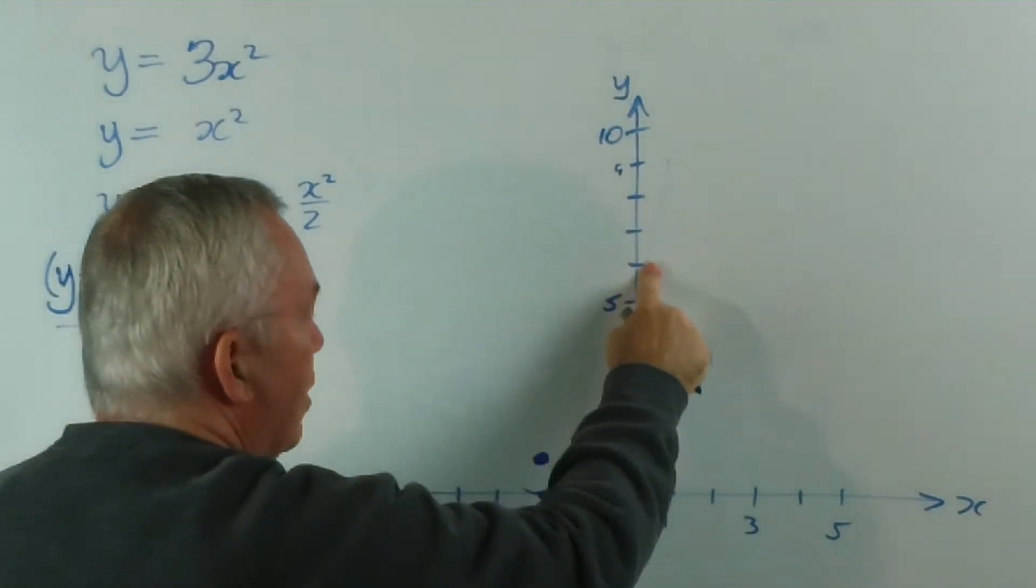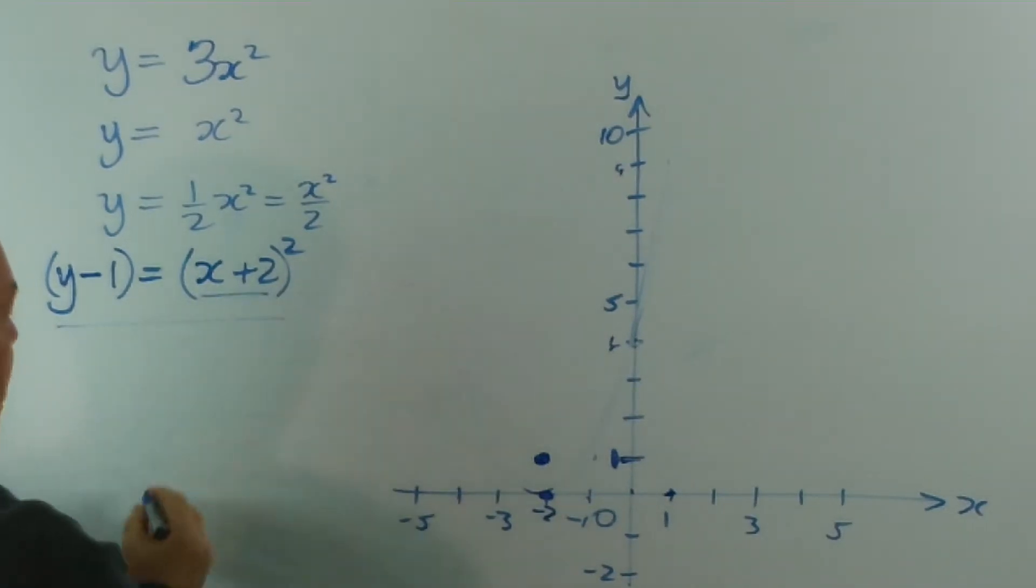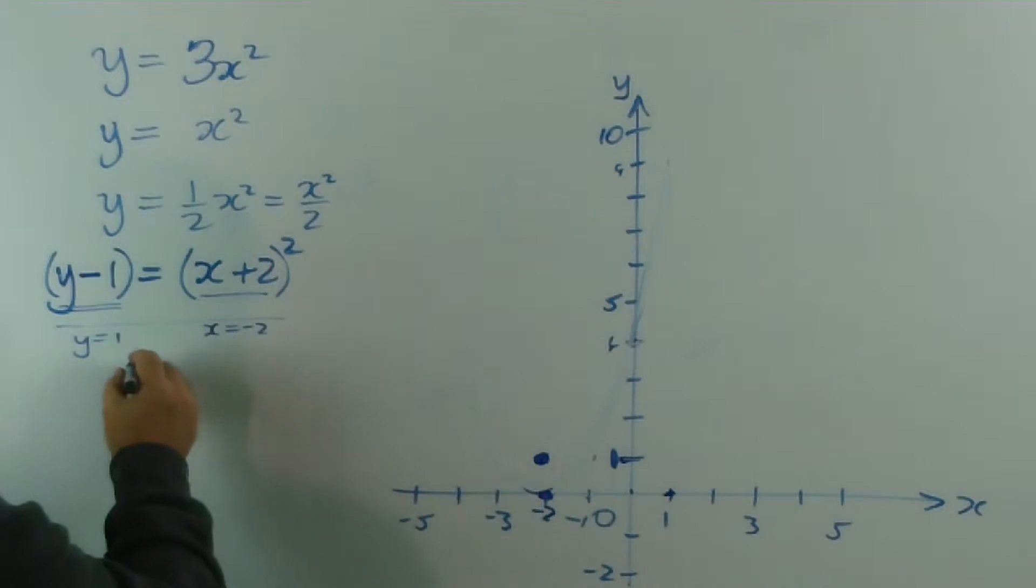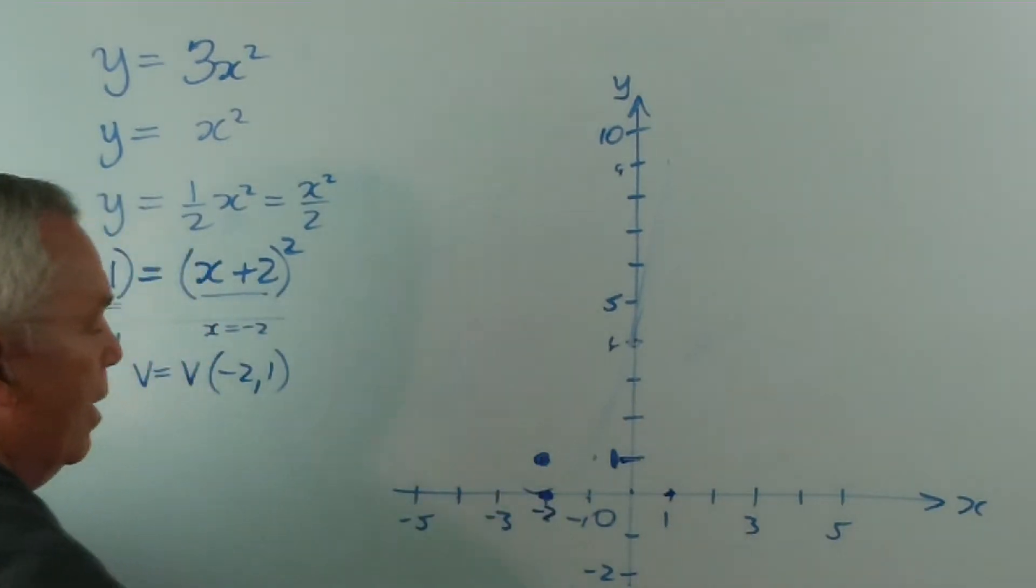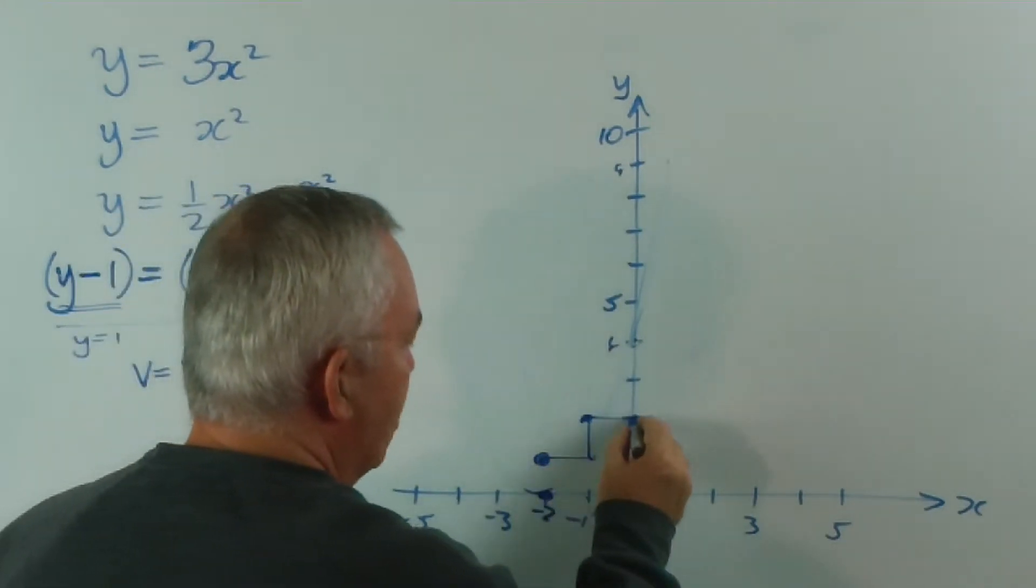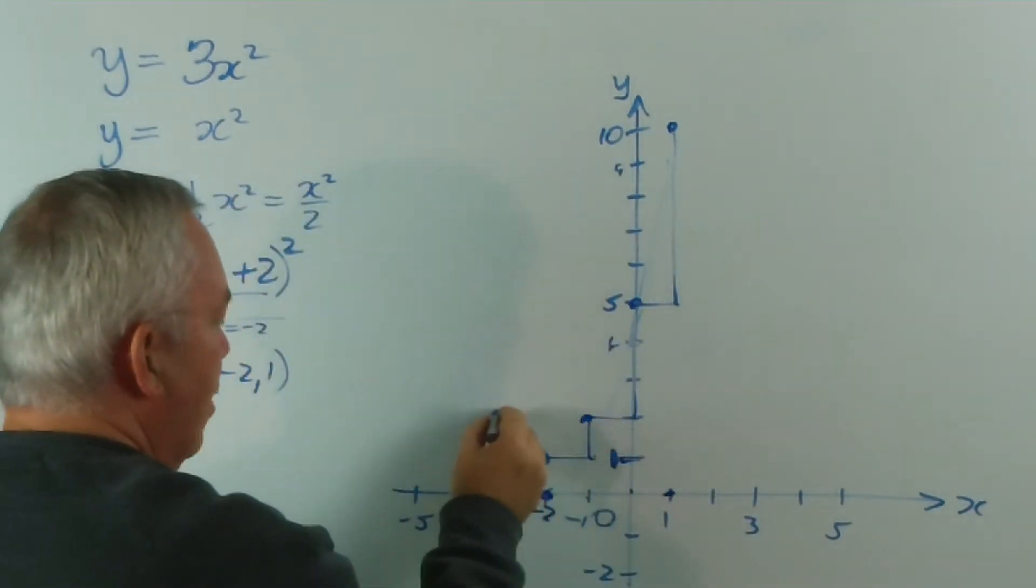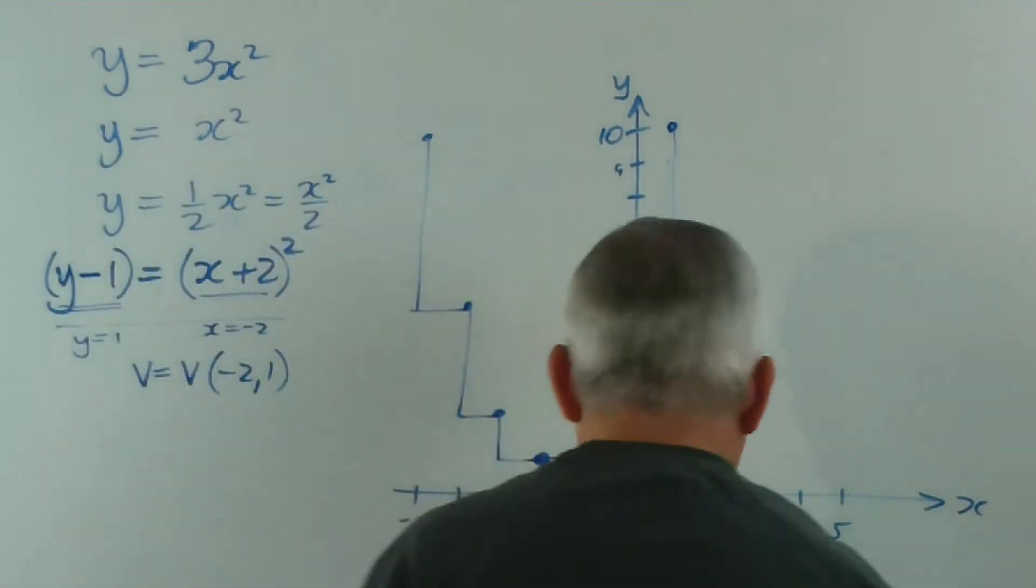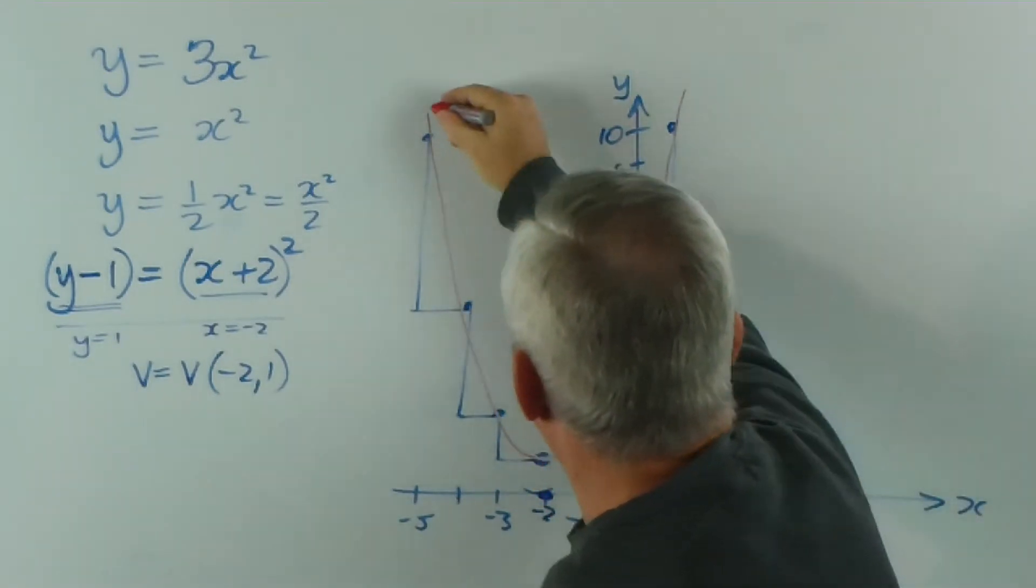So if we tried to graph this parabola, this one, we would look at that to get x equals minus 2. We would look at this to get y equals 1. And then we would say the vertex is at the point minus 2, 1. There it is. Once we know where the vertex is, we can simply graph our parabola. Across 1 up 1, across 1 up 3, across 1 up 5. Back 1 up 1, back 1 up 3, and back 1 up 5. So you can see that knowing that odd-number pattern will help us graph the parabola quite nicely.